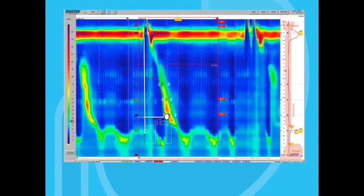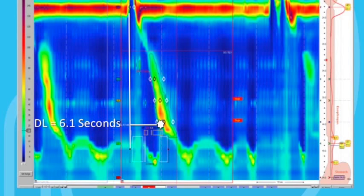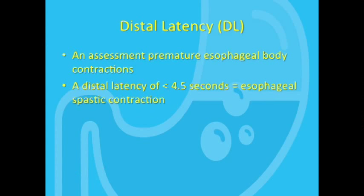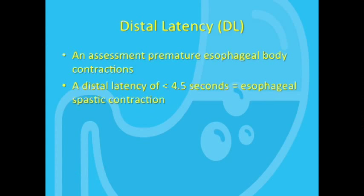In this case, the distal latency is 6.1 seconds. Any distal latency greater than 4.5 seconds is normal. Anything less than that indicates rapid progression of esophageal pressure waves or spasm.